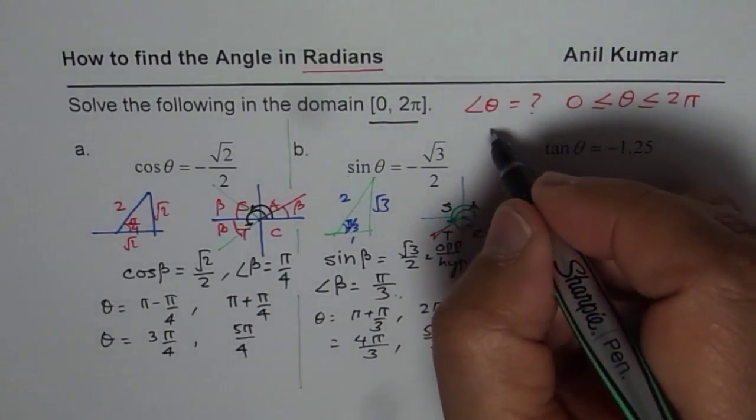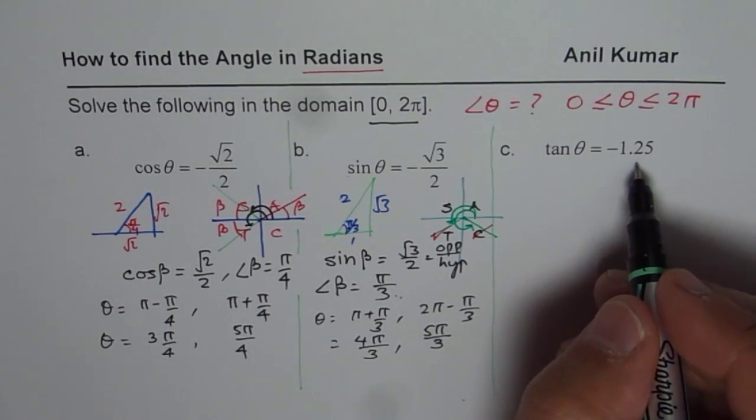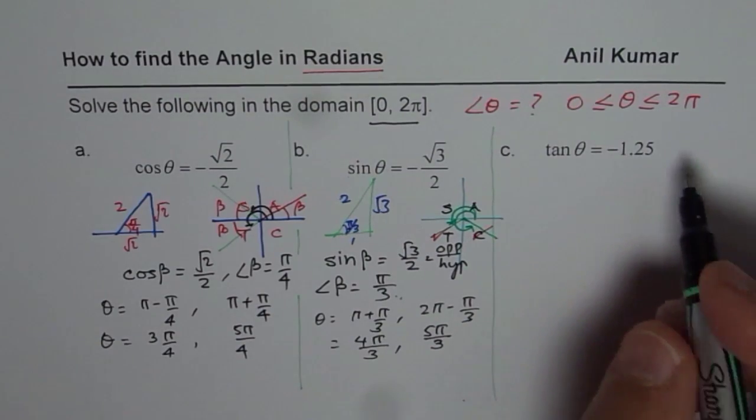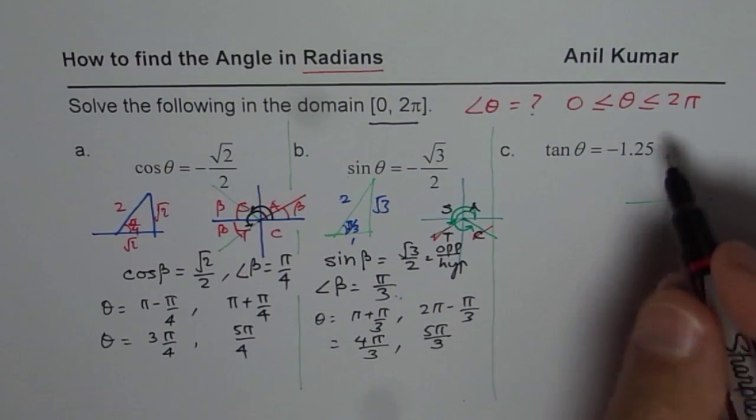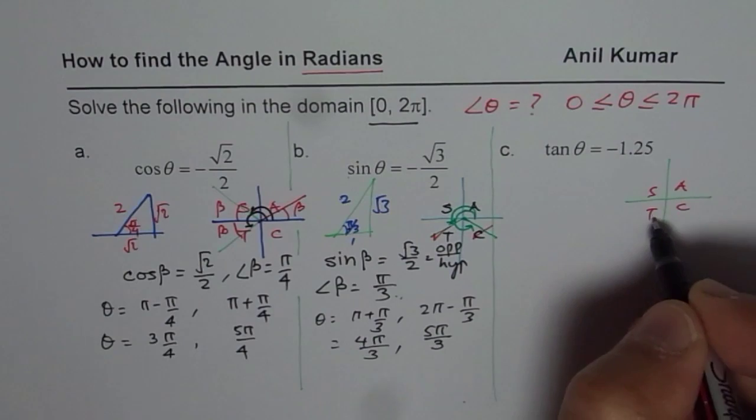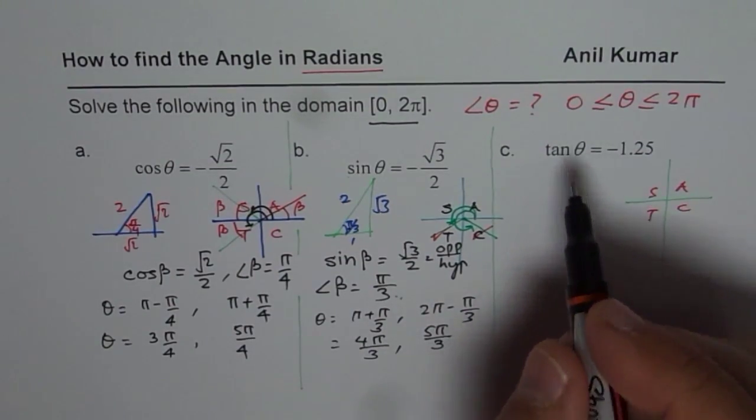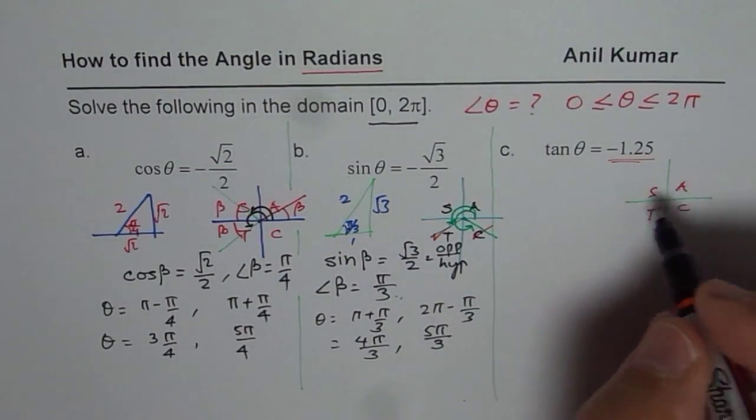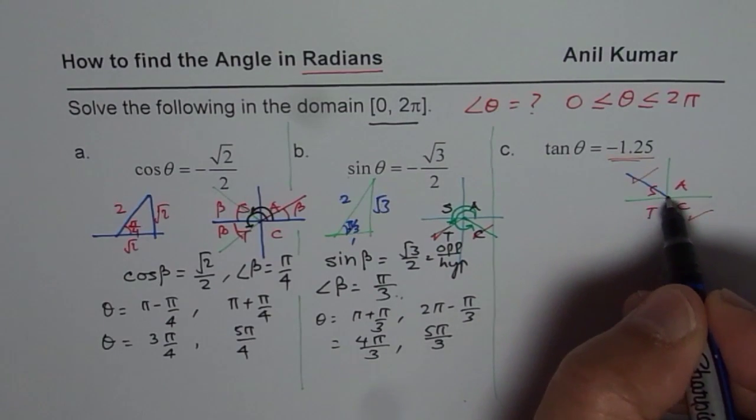Now let's do the one in tan. Tan θ = -1.25. Now in this case you cannot use special triangles, we will use calculator. The rule is you could write CAST rule or all students take calculus. We are wanting negative value for tan. Tan is negative in these two quadrants, quadrant 2 and 4, so we are looking for two solutions.